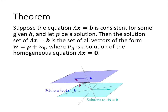This works in general and leads to an important theorem. If Ax equals b is consistent — meaning it has at least one solution — let p be one particular solution. Then the full solution set of Ax equals b consists of all vectors of the form p plus v_h, where v_h is any solution to the homogeneous equation Ax equals 0. Geometrically, we take the homogeneous solution set and translate it by p.